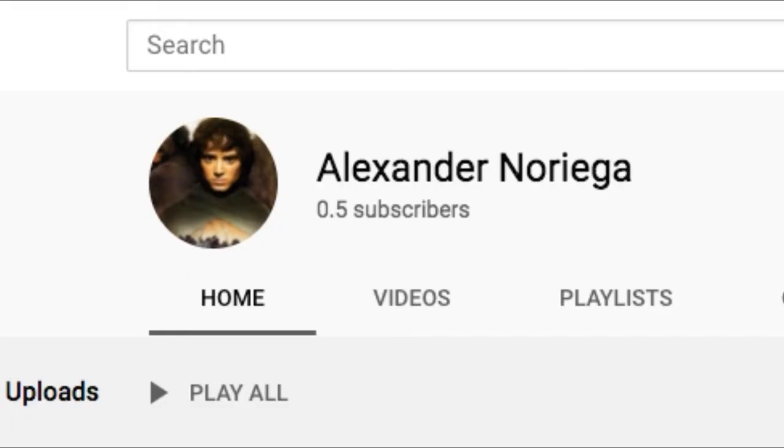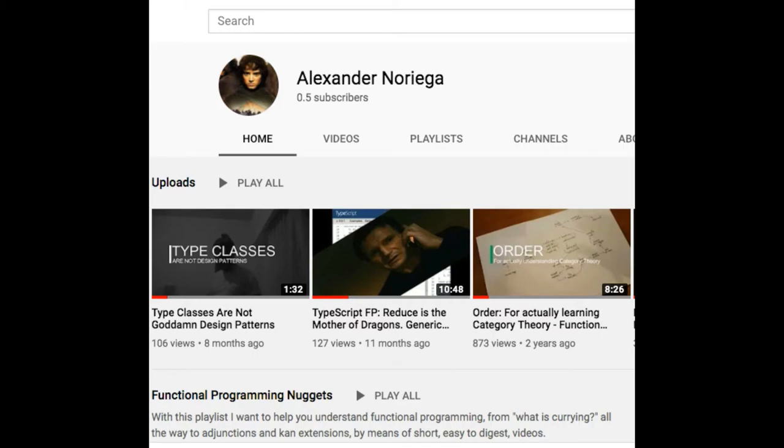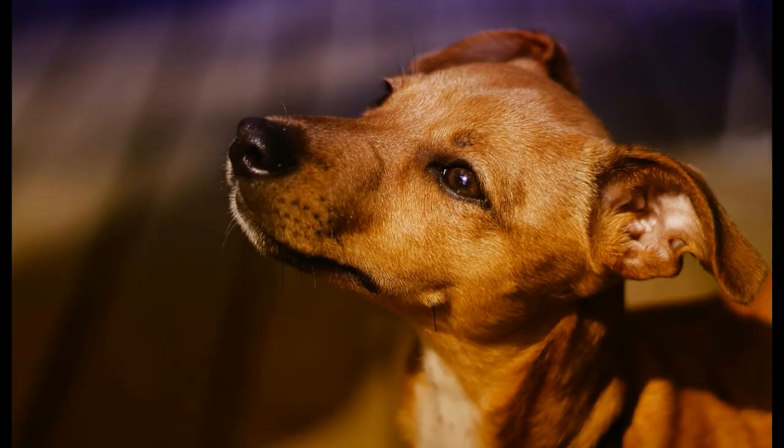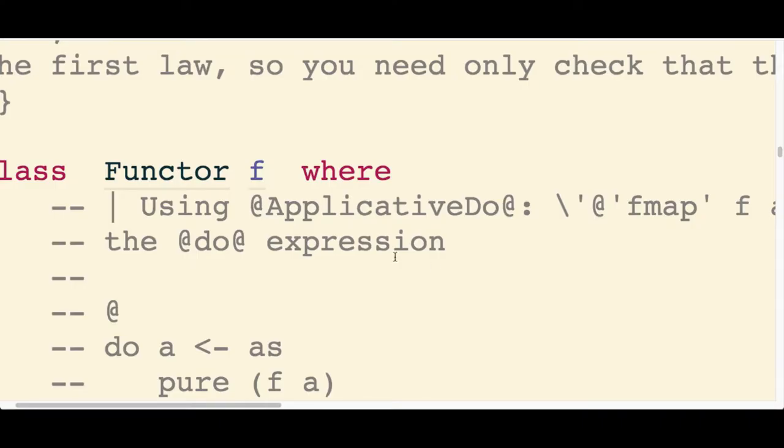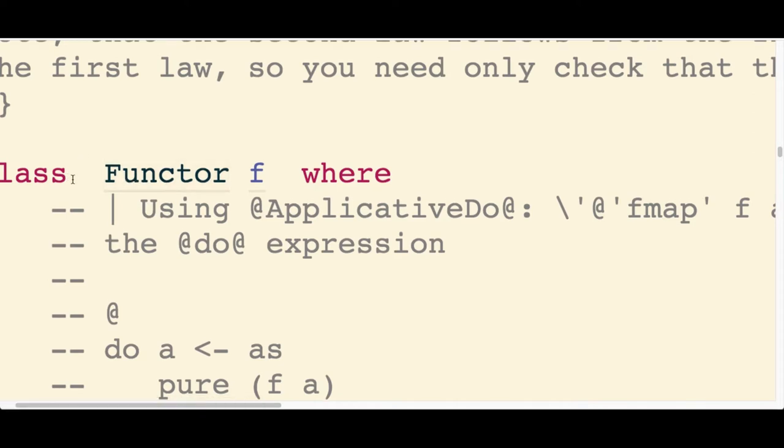So we're gonna talk about a new type of map, but we're gonna start somewhere familiar, which is the normal, classic, good old functor.